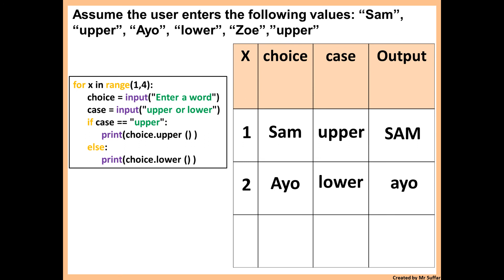Then we go back to the start of the loop. So to 3, x will increase from 2 to 3. Then the next input is Zoe. And case is upper. And then it says if case is equal to upper. Yes, that's true. So I will print choice.upper, which is Zoe all in uppercase.